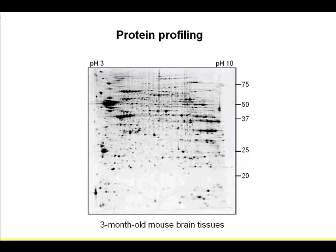Tubulin, actin, heat shock proteins — some heat shock proteins, small ones like alpha-crystallin, cohthalene, and calcium binding proteins.